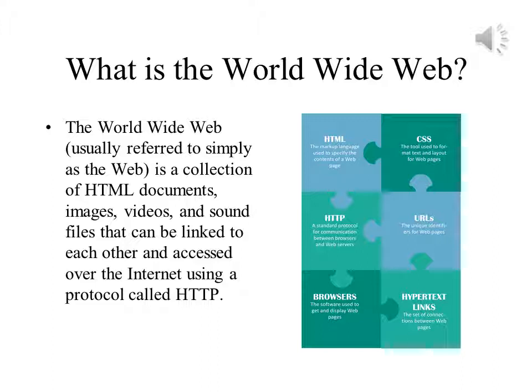Web browsers and servers make use of HTTP, or Hypertext Transport Protocol, to determine how to request a particular web page and how it is transmitted back to a browser on a particular machine. Browsers also use CSS, or Cascading Style Sheets, which are used to determine the exact formatting of a given page.